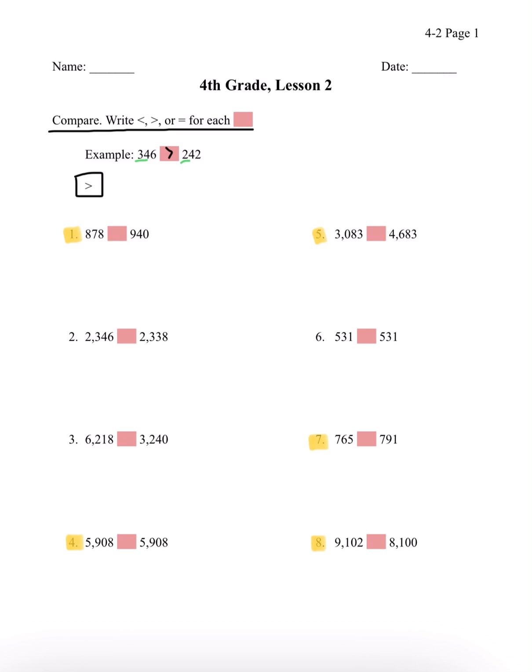I'm going to be going over numbers 1, 4, 5, 7, and 8. Number 1, we have 878 and 940. If we look at the first number in the 100th place, we have an 8 and a 9. We know that 9 is bigger than 8, so the answer is 878 is less than 940.